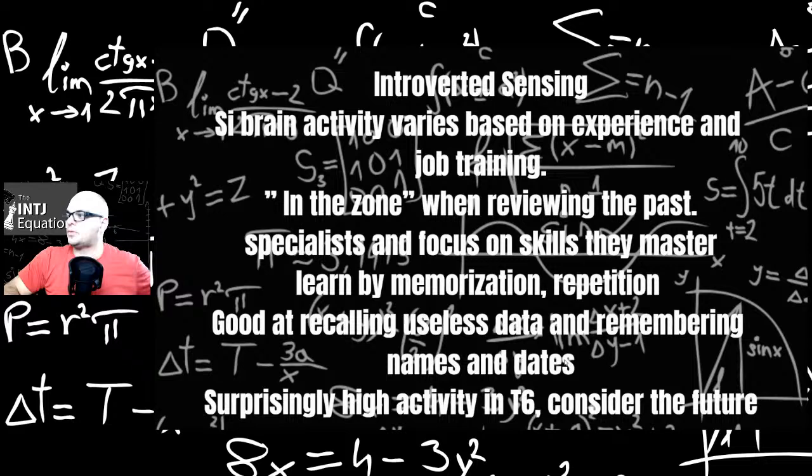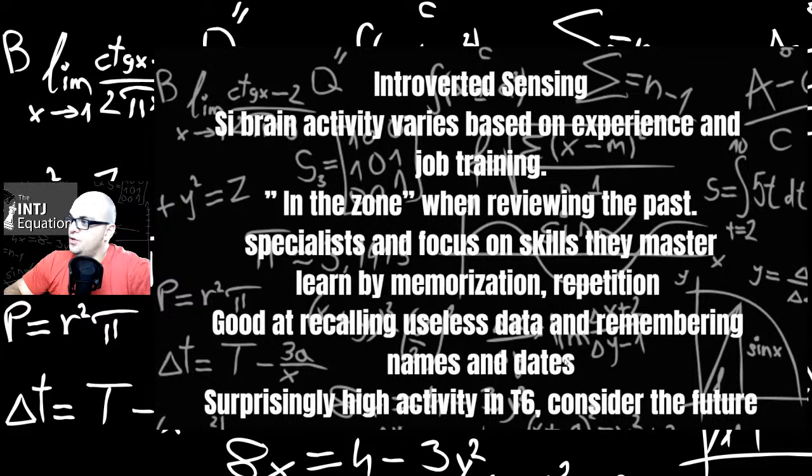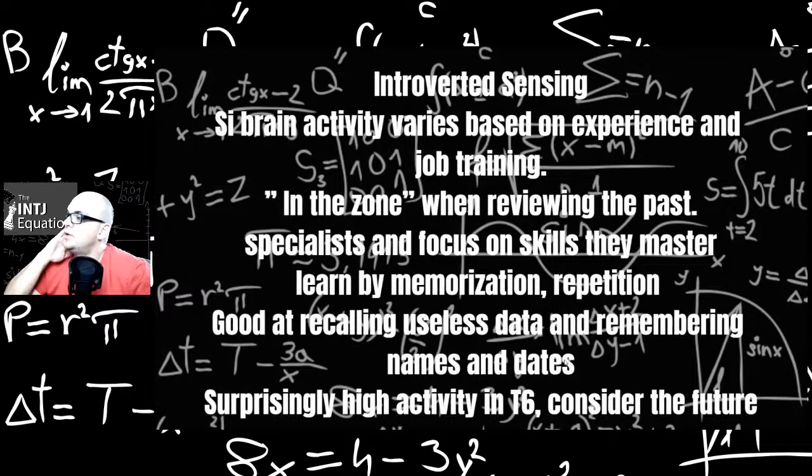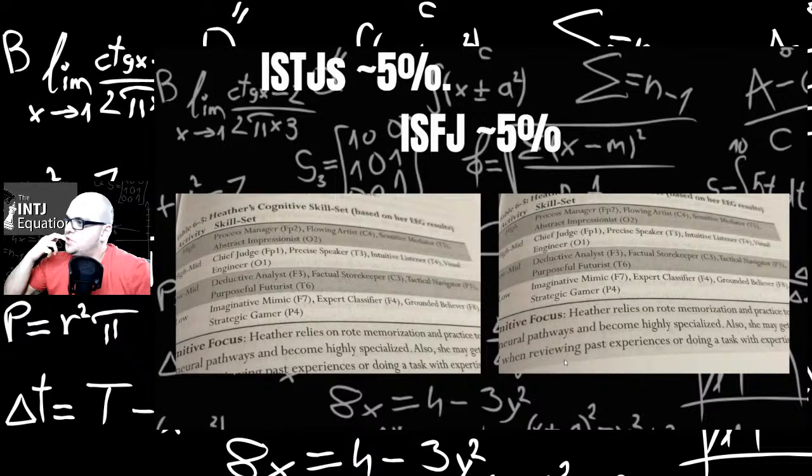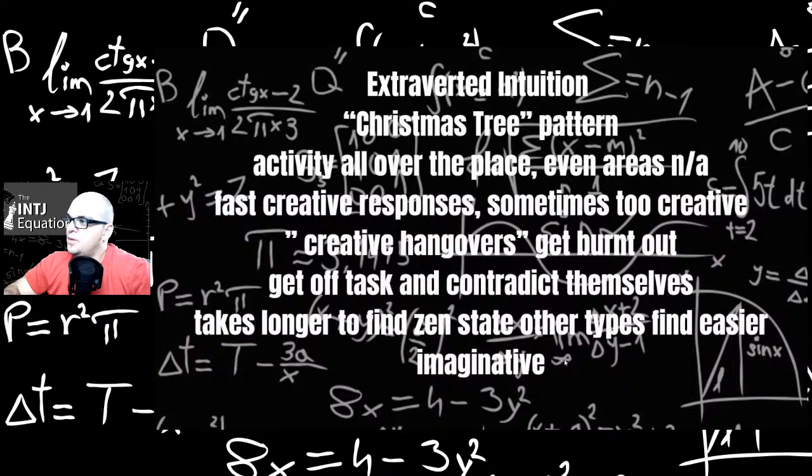Introverted sensation. Si brain activity varies based on experience and job training. So it's kind of like what their expertise is and basically in the zone and reviewing the past. Their whole neocortex lights up when they are resorting to recall basically. Specialists who focus on skills they master. Learn by memorization, repetition, good at recalling useless data and remembering names and dates. Surprisingly high activity in T6, which is considering the future. So I know Si and Ni, they kind of have a lot of overlap and they can be confused with one another, even though if you're an Si hero, you have Ni demon and vice versa. ISTJs are 5% of the population and ISFJs are 5% of the population. I think that is totally wrong. They're probably some of the most common types there are.